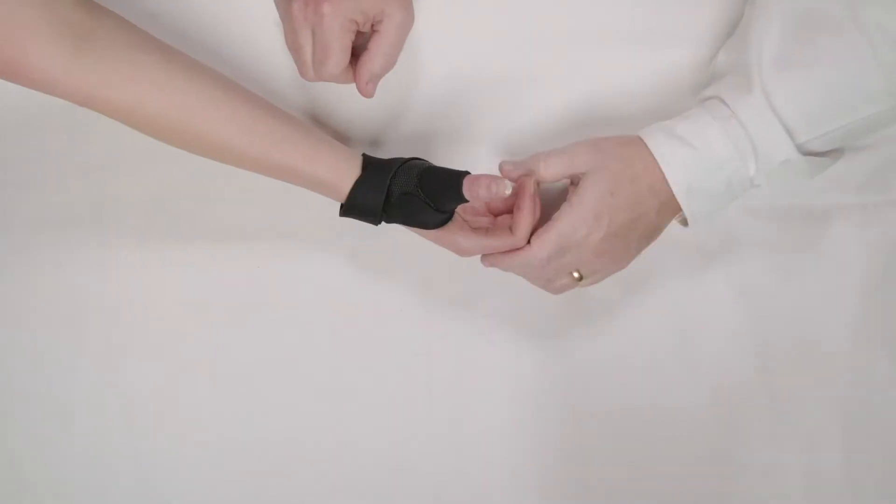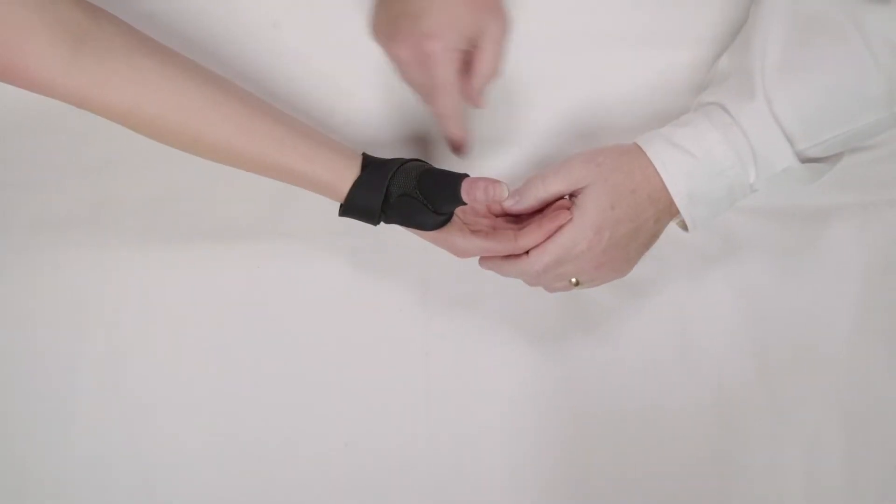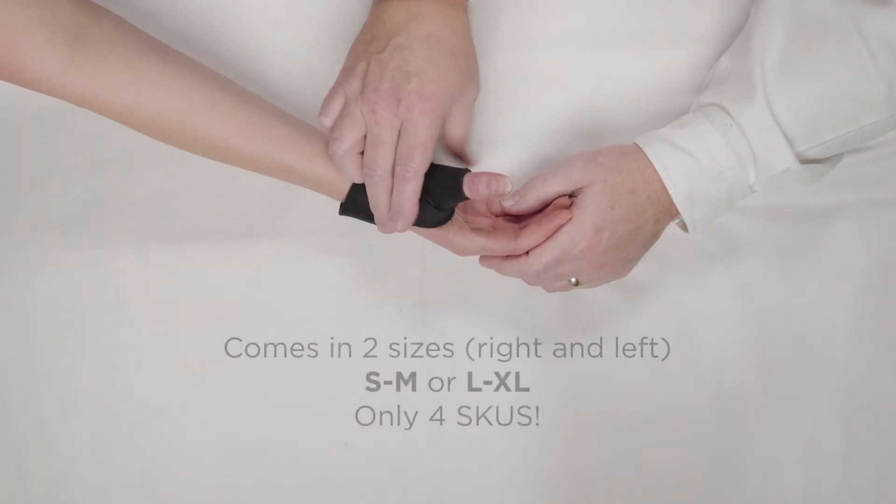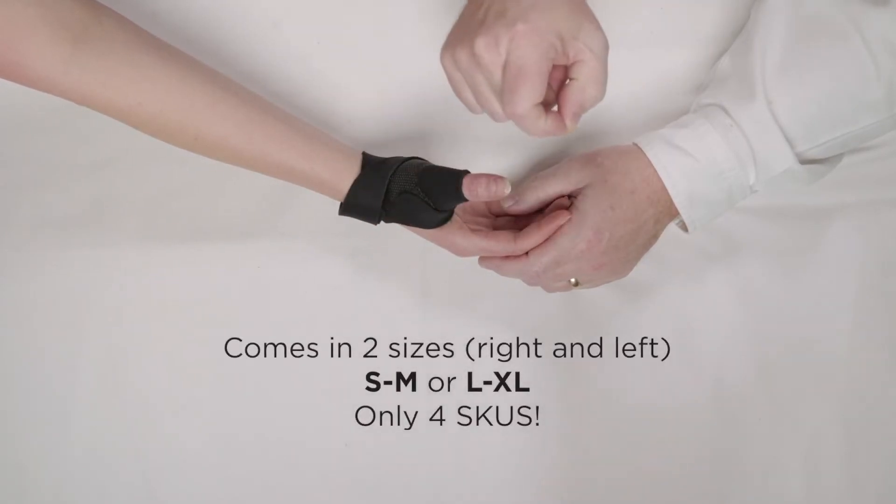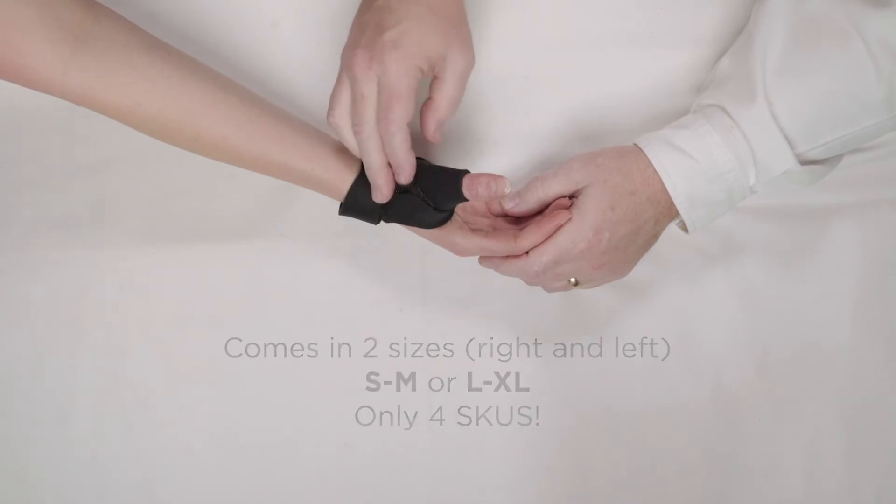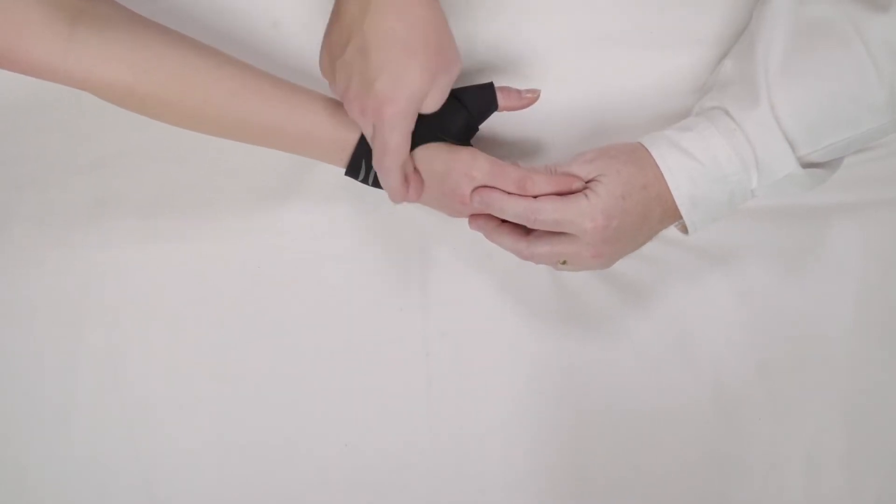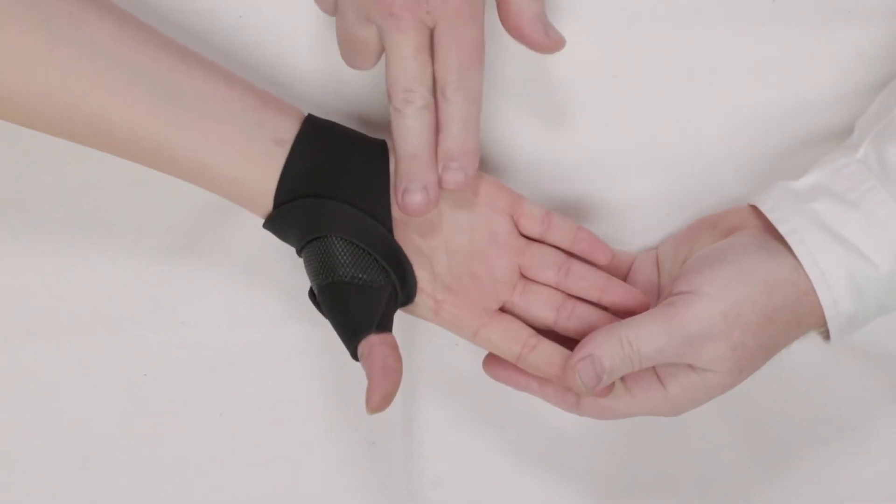How does that feel? Pretty good. There's reduced inventory with the product. The brace comes in two sizes: right and left, small/medium and large/extra-large. It has a completely open hand, dorsum of the hand, and volar aspect of the hand.